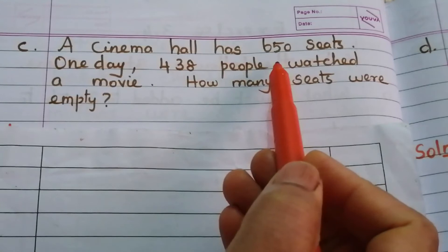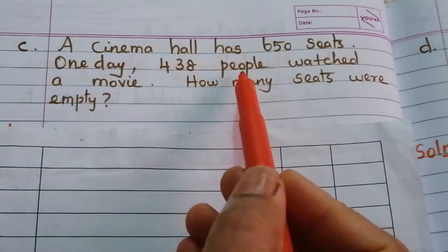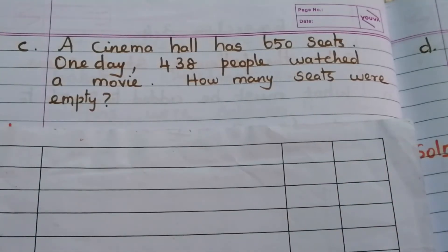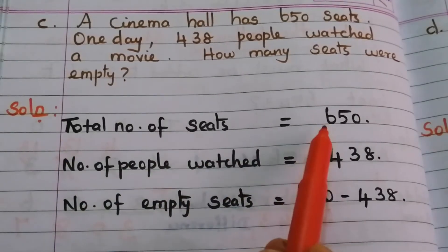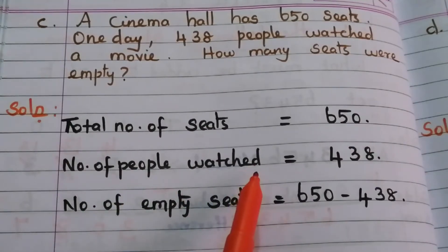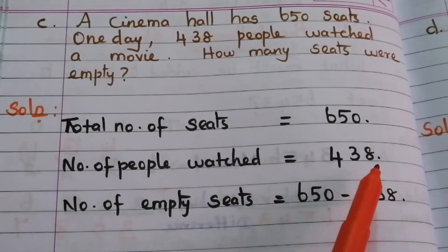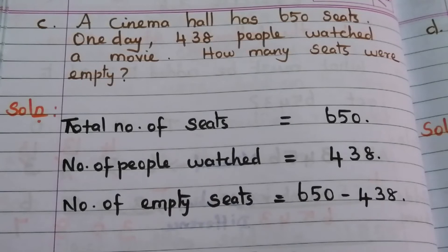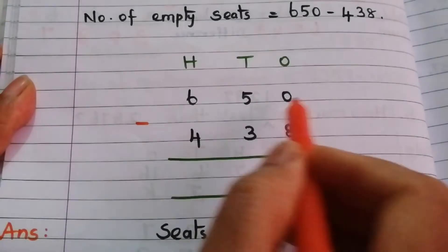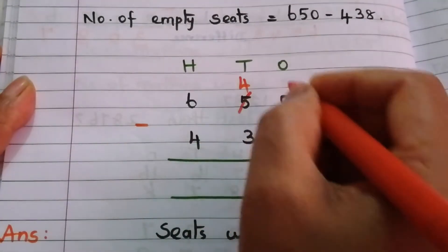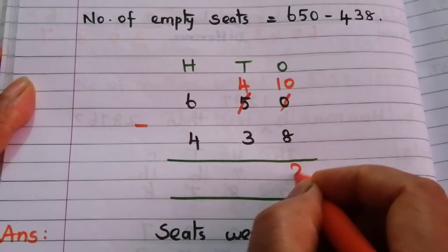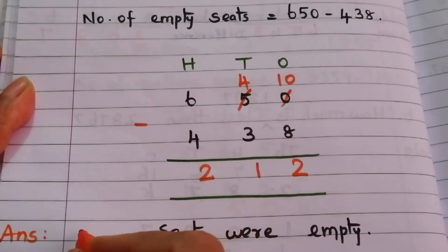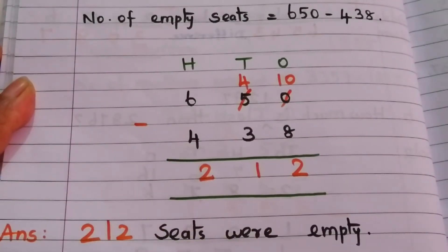C: A cinema hall has 650 seats. One day, 438 people watched a movie. How many seats were empty? Write down the given data: total seats = 650, number of people who watched = 438. Number of empty seats = 650 minus 438. We cannot subtract 8 from 0, so borrow — 10 minus 8 = 2. 4 minus 3 = 1. 6 minus 4 = 2. The answer is 212 seats were empty.